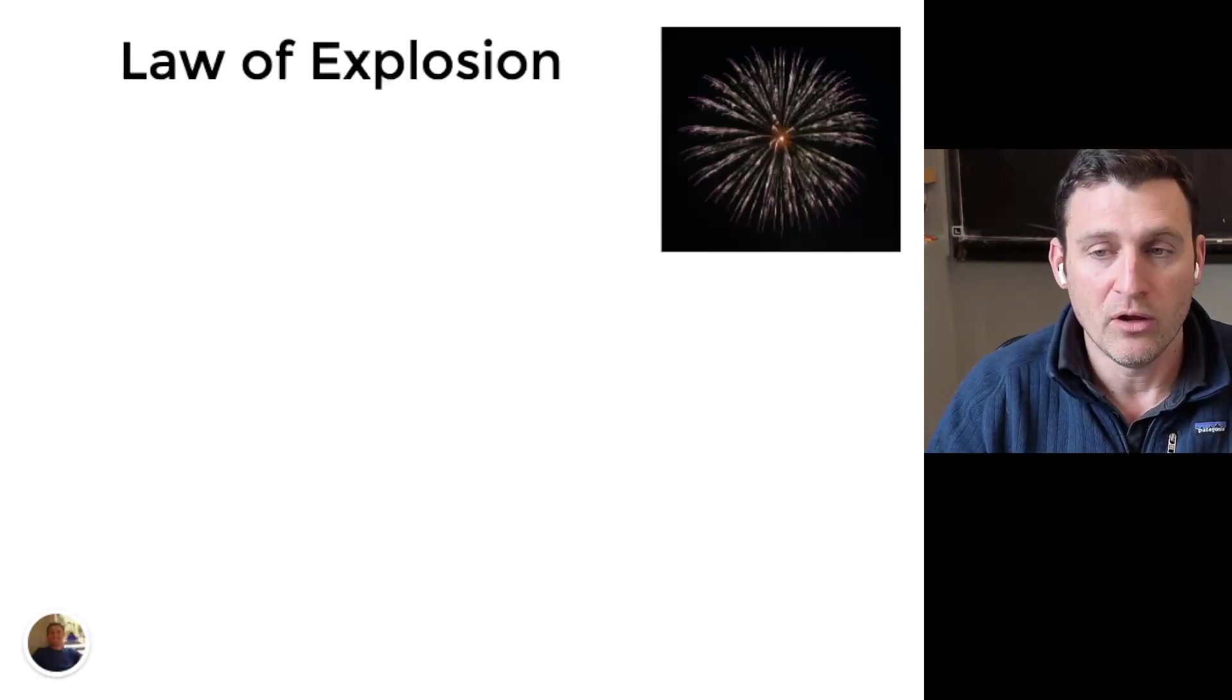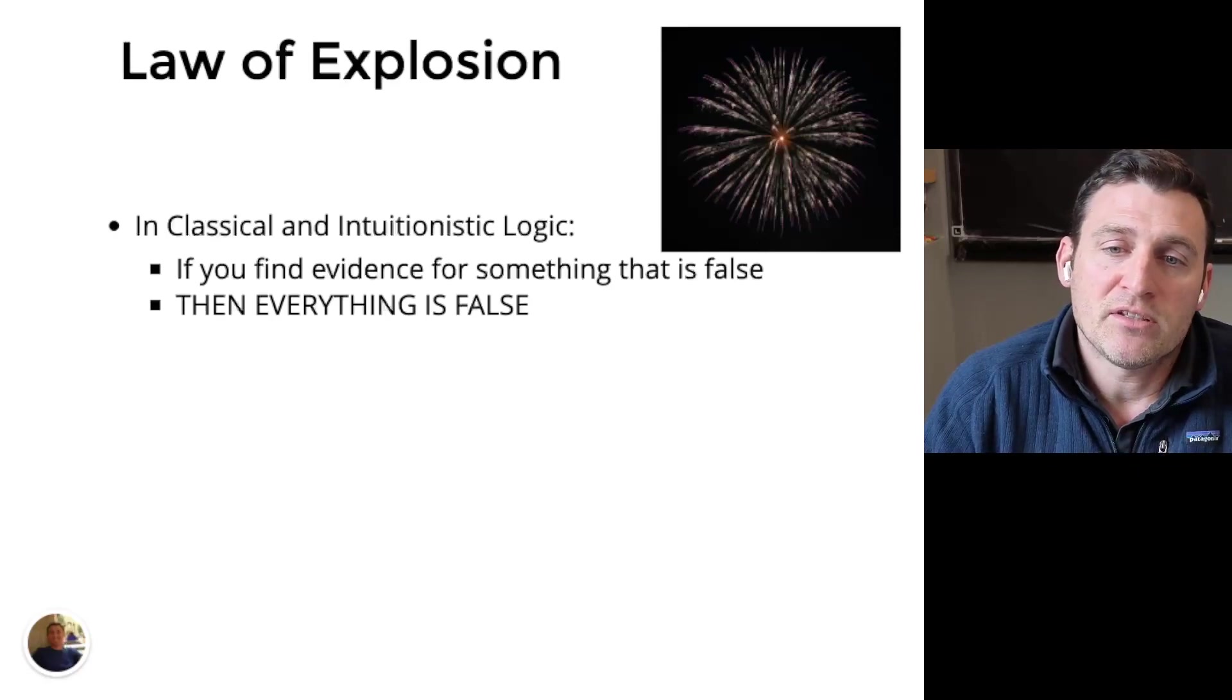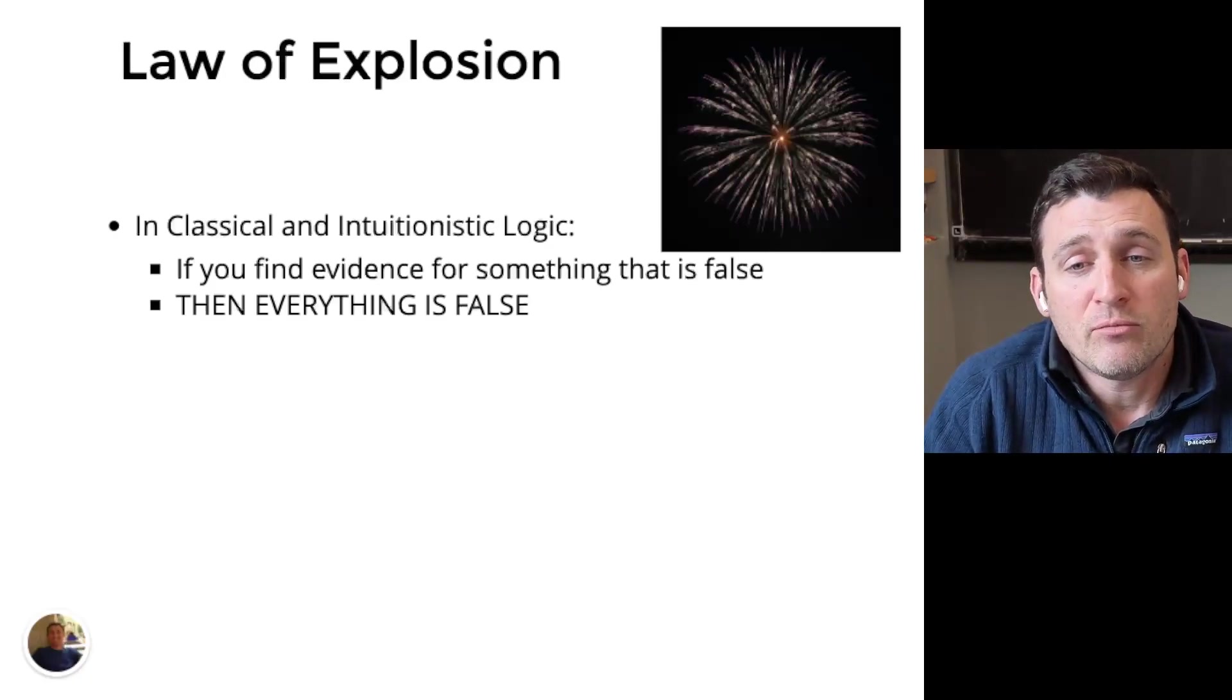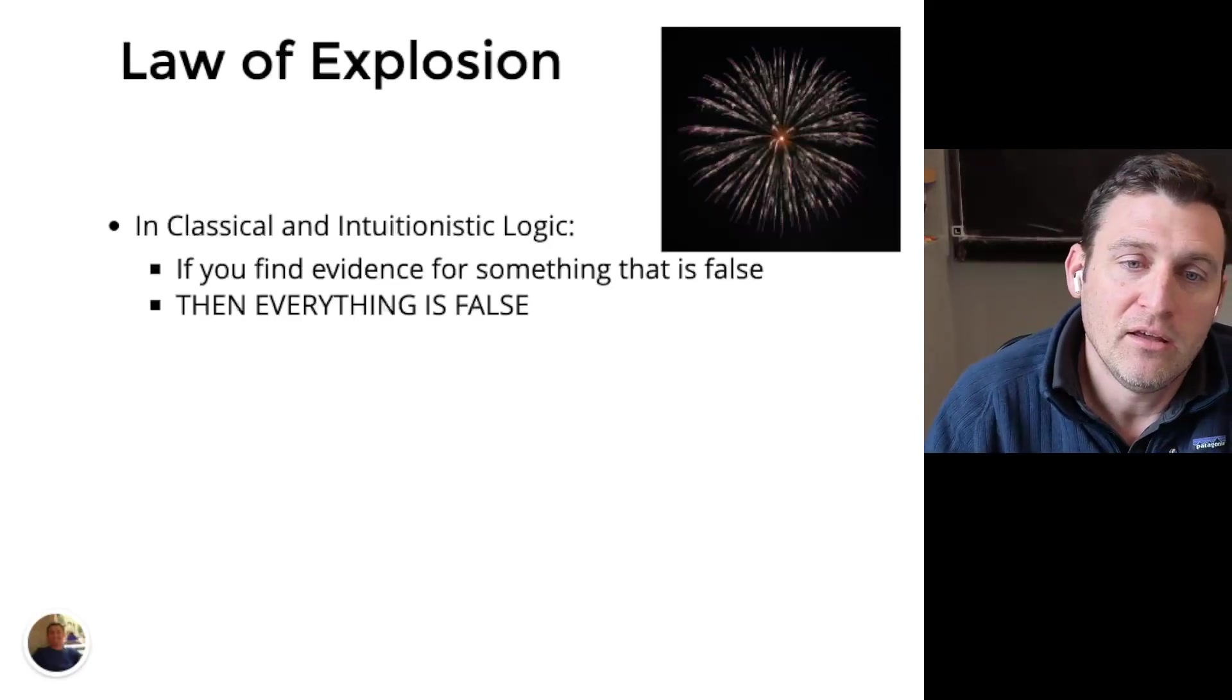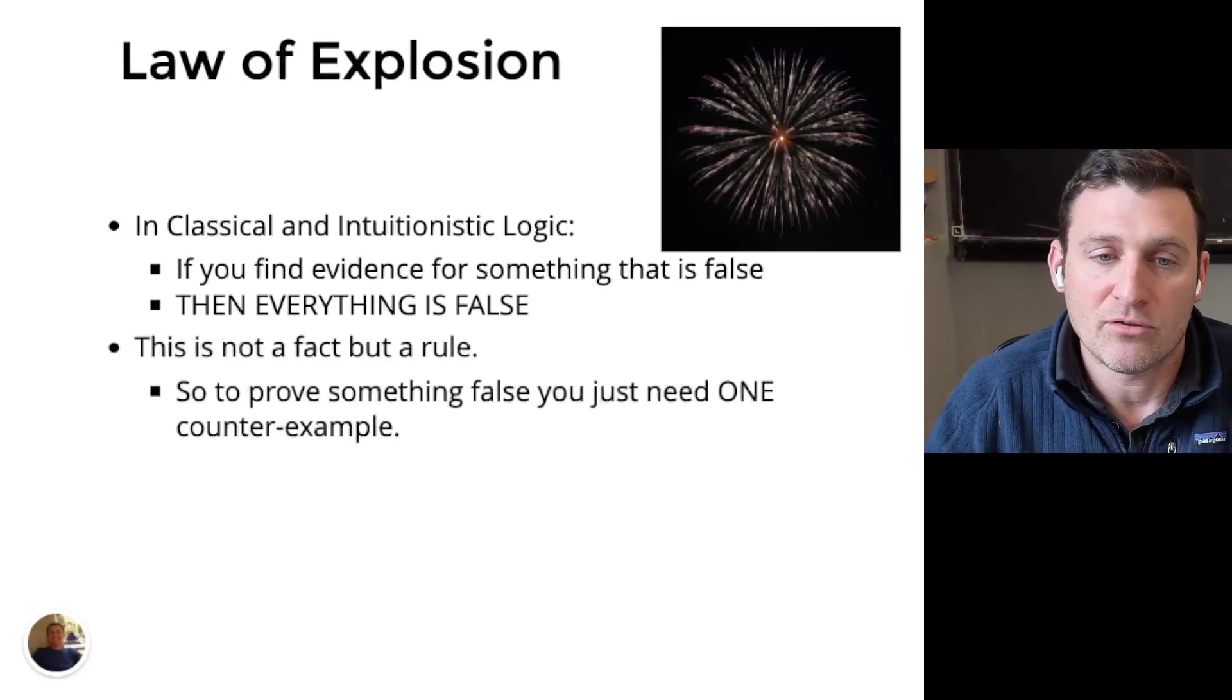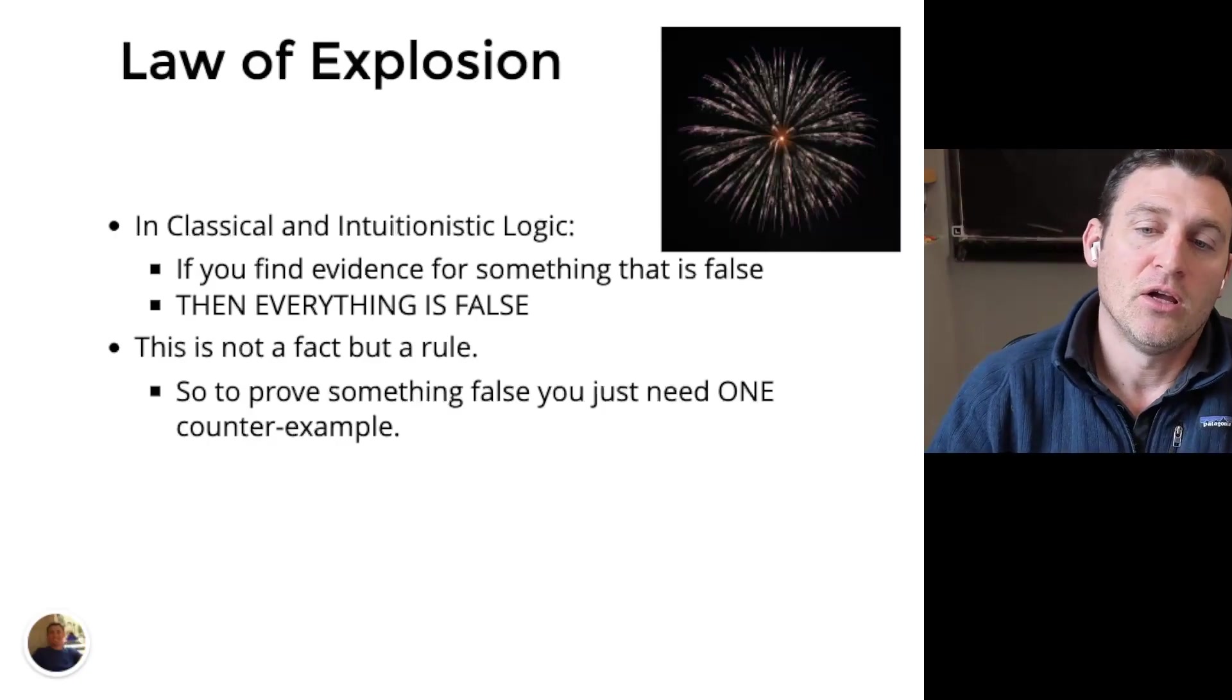The first one I want to point out is the law of explosion. This one really matters for how you argue with one another and with programs. In both classical computing and intuitionistic logic, those are the first two models, we have the following rule of explosion. If you find evidence for something that is actually false, then everything is false. Let me say this very clearly. Suppose that I work very hard to write a proof out. And in writing the proof, I discover that says two equals seven. I know two does not equal seven. I'm therefore forced to throw everything I've done away. It's evidence that it's all false. We call this a counterexample.